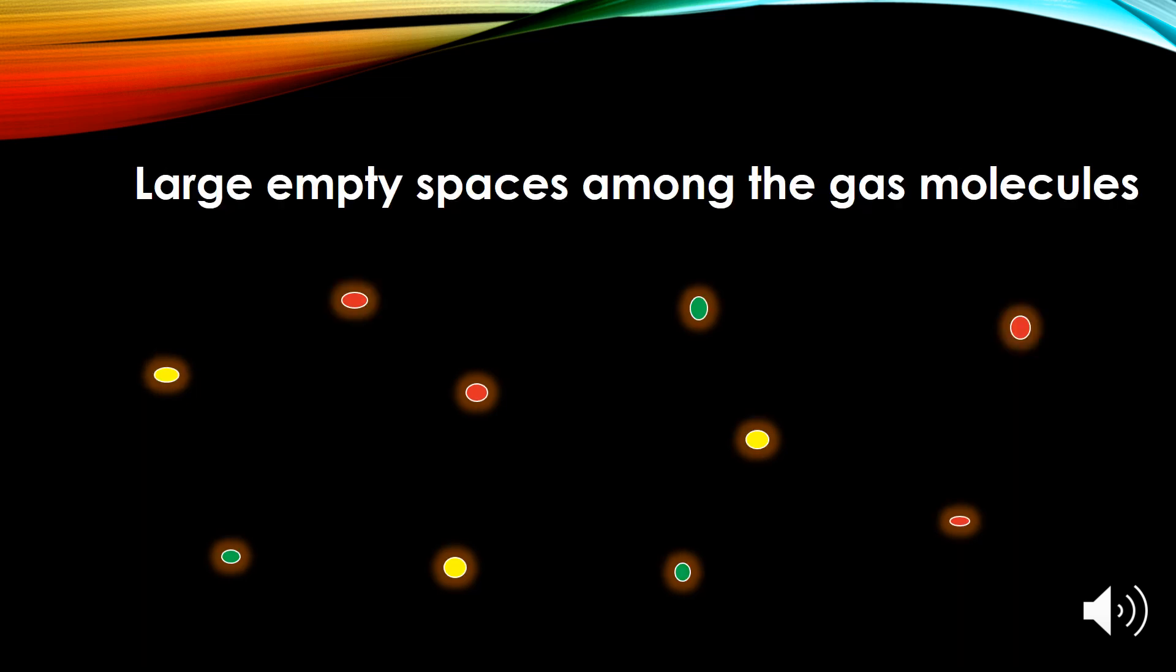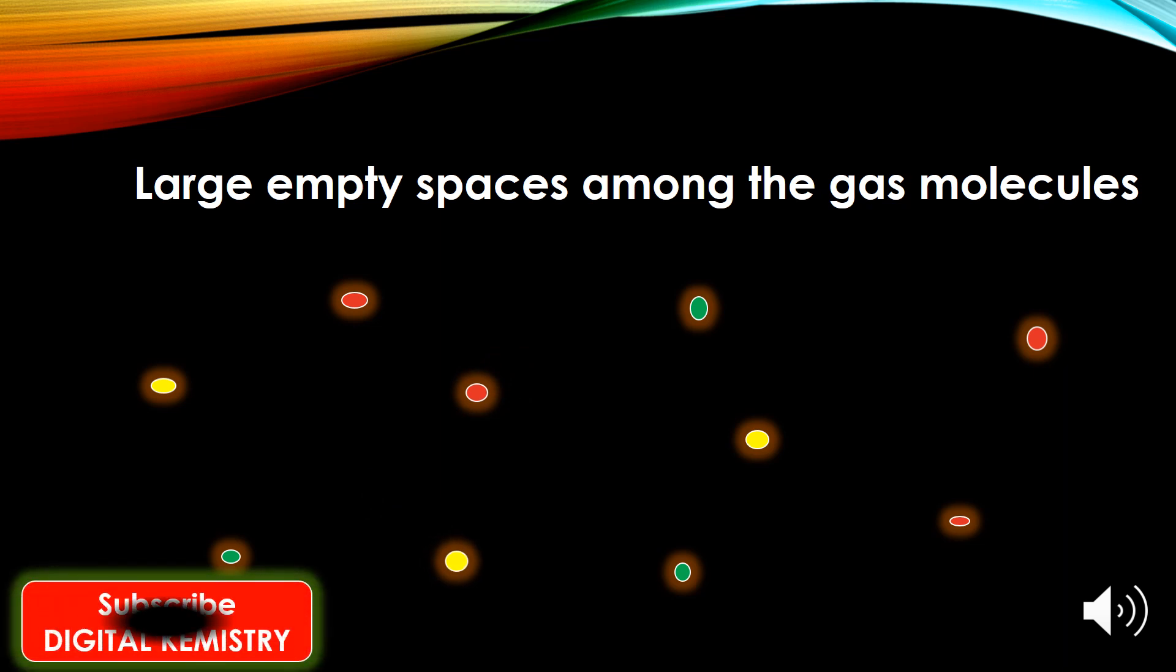Second point is all gas molecules which are widely separated from each other. As you can see here in a diagram that the gas molecules which are small particles and there are large empty spaces between these gas molecules.